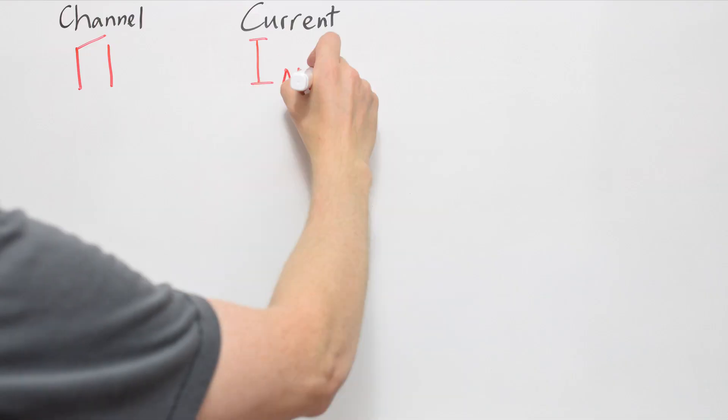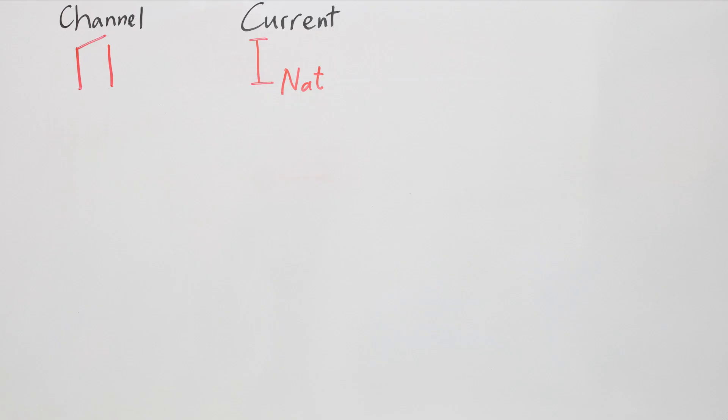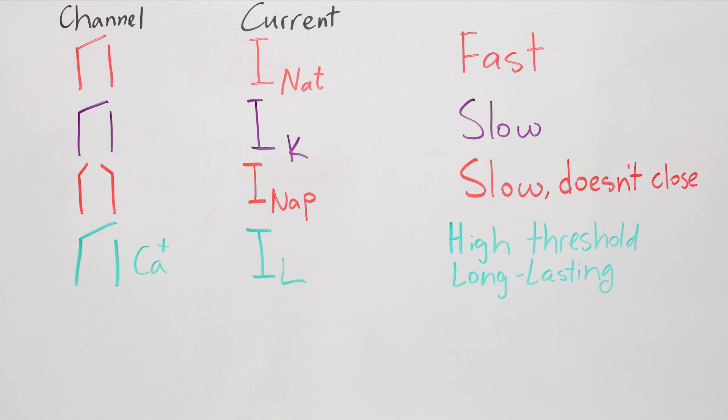Alright, we just saw two channels in action. A channel that creates a transient sodium current, that opens fast and closes fast. And a channel that creates a potassium current, that opens and closes slowly. There are many other channels creating different kinds of currents. Like a sodium channel that opens slowly and doesn't close. A calcium channel that's triggered when voltage gets really high, and that creates a long-lasting current.